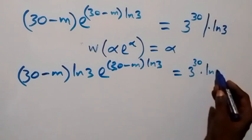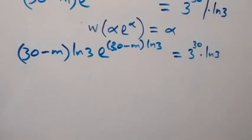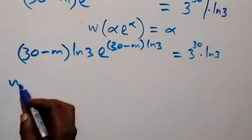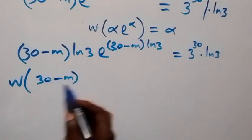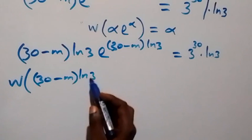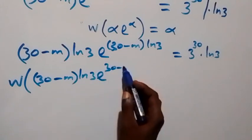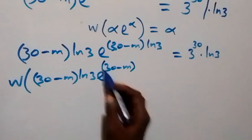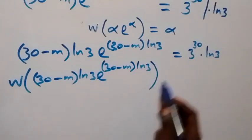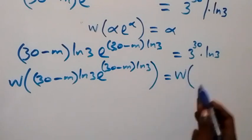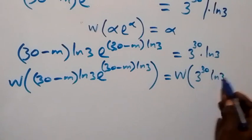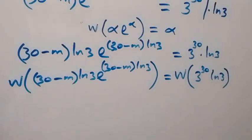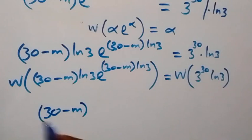Taking the W function on both sides, the left side reduces to (30 minus m) ln 3. On the right side we have W of the bracket containing ln 3 times e to the power (30 minus m) ln 3, which equals W of 3 raised to power 30 times ln 3. So 30 minus m times ln 3 equals W(3^30 · ln 3).